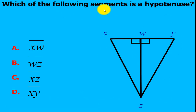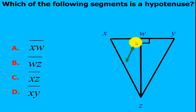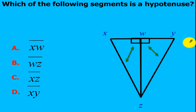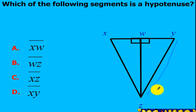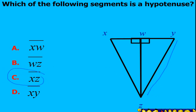Alright, which of the following segments is a hypotenuse? Look at your right angle — the side across the right angle will be your hypotenuse. So we can have either line segment XZ or line segment YZ. In this case, we only have line segment XZ, so this will be your answer.